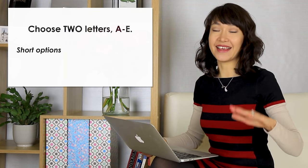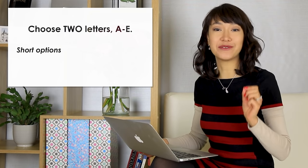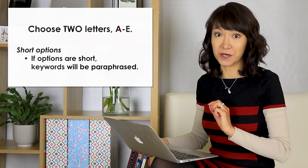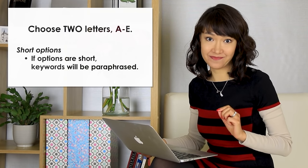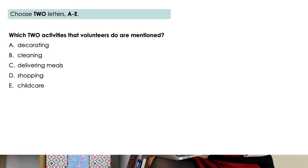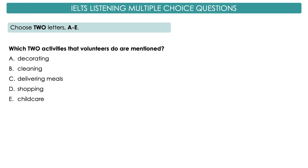It seems that when options are short, all keywords are paraphrased. Here is an example. Let's read it first. Which two activities that volunteers do are mentioned? Decorating, cleaning, delivering meals, shopping, or childcare? Now please listen and find two answers.